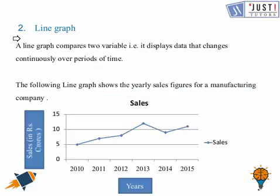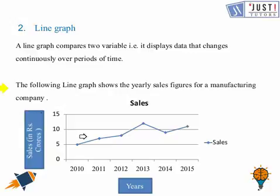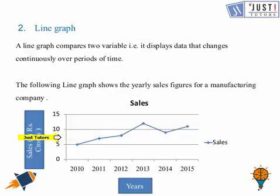Now let's proceed with line graphs. As the name suggests, a line graph is made by drawing lines. It compares two variables and displays data that changes continuously over a period of time. This line graph is showing yearly sales figures for a manufacturing company — in 2010 it was 5 crores, in 2011 it was 7.5 crores, and so on. This is how we draw a line graph.